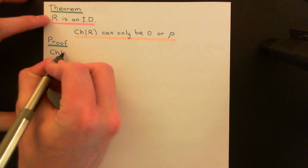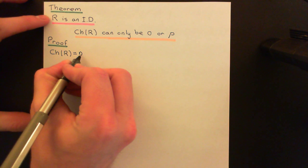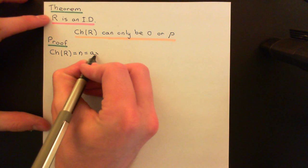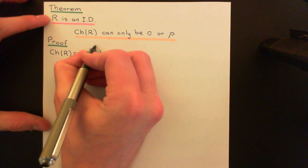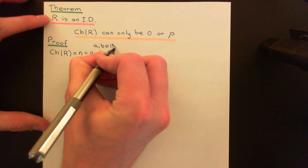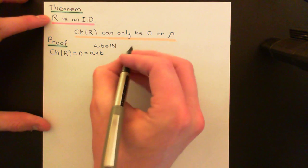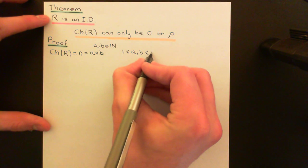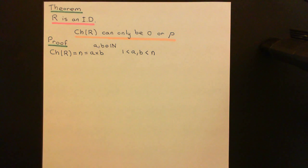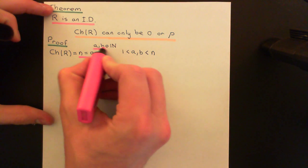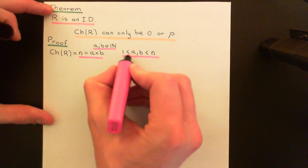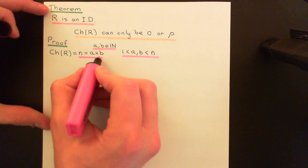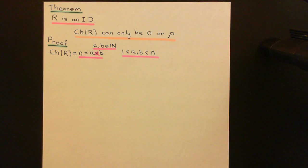We assume that the characteristic of our integral domain equals some natural number N, where N is composite, meaning N = A times B, where A and B are natural numbers both strictly greater than one and strictly less than N. This is multiplication in the natural numbers giving N.